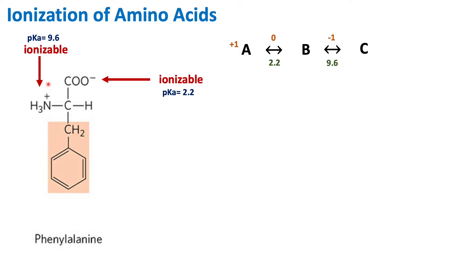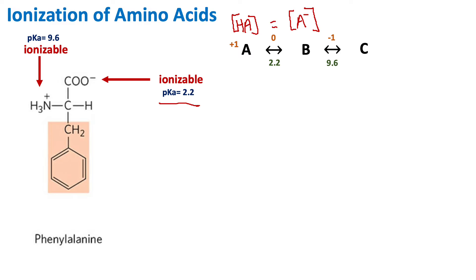This R group has no ionizable groups, so we only have two ionizable groups: the carboxyl group and the amino group. Since they are ionizable — able to donate or accept protons — they have pKa values. The carboxyl group pKa is 2.2 and the amino group pKa is 9.6. When the pH of the solution equals the pKa, the protonated form HA will be in equilibrium with the deprotonated form A-.